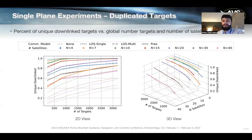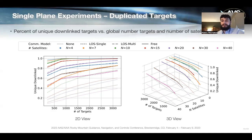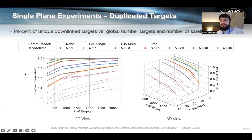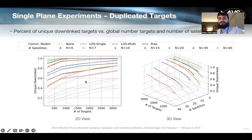Another metric is the number of unique downlinked targets. For few spacecraft with free communication, we get a ratio near 1 — almost every downlinked target is unique — because they're rarely over the same target and can communicate 'I've already taken that one.' For no communication, duplication is much higher, as expected. Line-of-sight and the other cases fall in between, consistent with expectations.